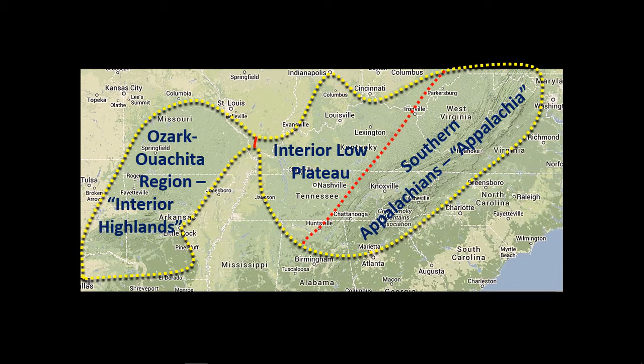To the west, we have the Ozark-Wichita region, also known as the Interior Highlands. As the name implies, this is more of an upland feature. The Interior Highlands and the Southern Appalachians were actually formed from the same mountain-building event; however, they've been separated over time by the Mississippi River. The Interior Highlands includes a good amount of Arkansas, Southern Missouri, and even a little bit of Eastern Oklahoma.